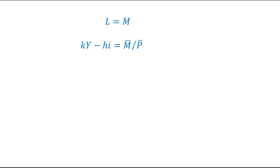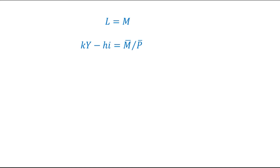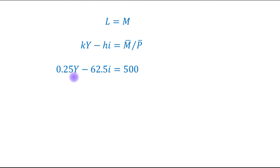We know that our money demand function is of the form kY minus hi, and the real money supply is written as nominal money supply divided by the price level. The real money supply is given as 500. In the next step we will incorporate their values, giving us 0.25Y minus 62.5i equals 500.